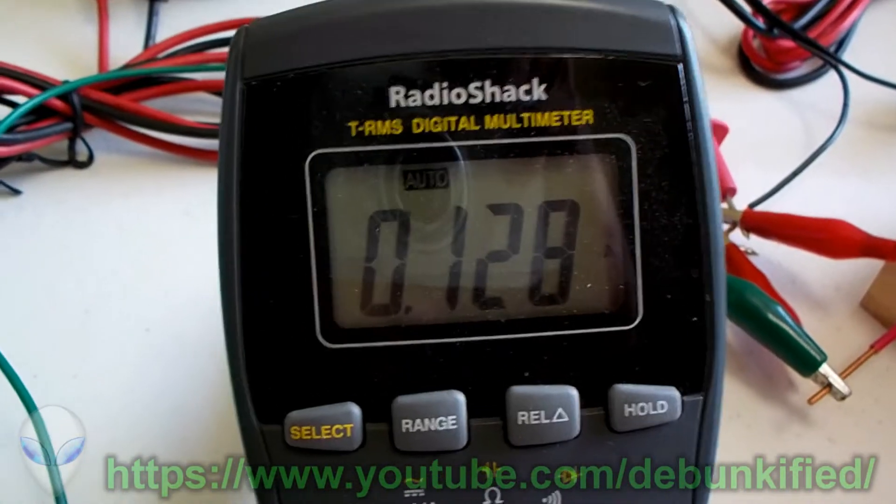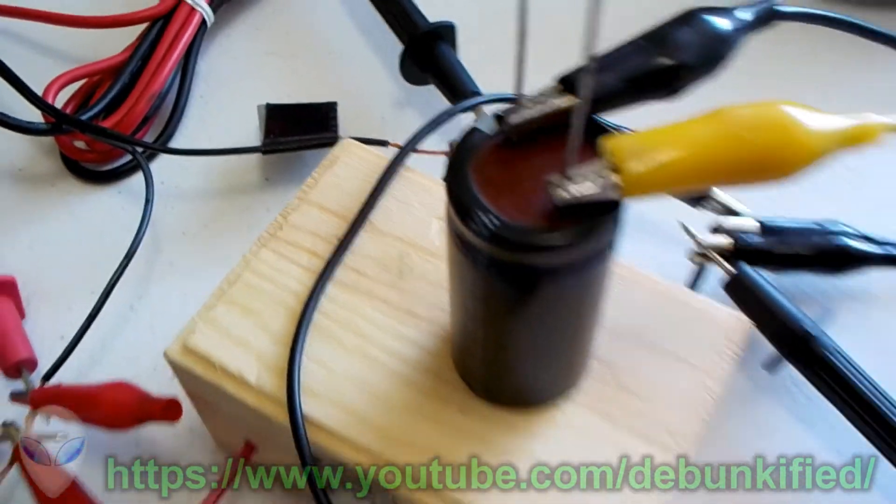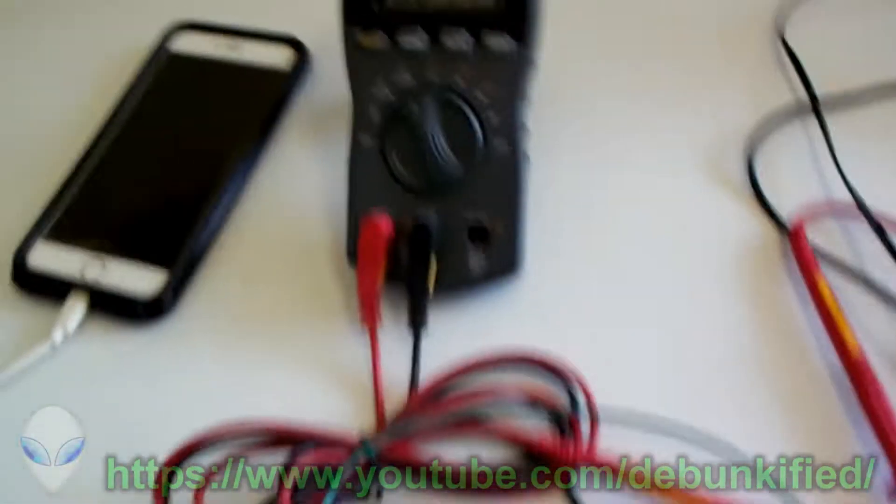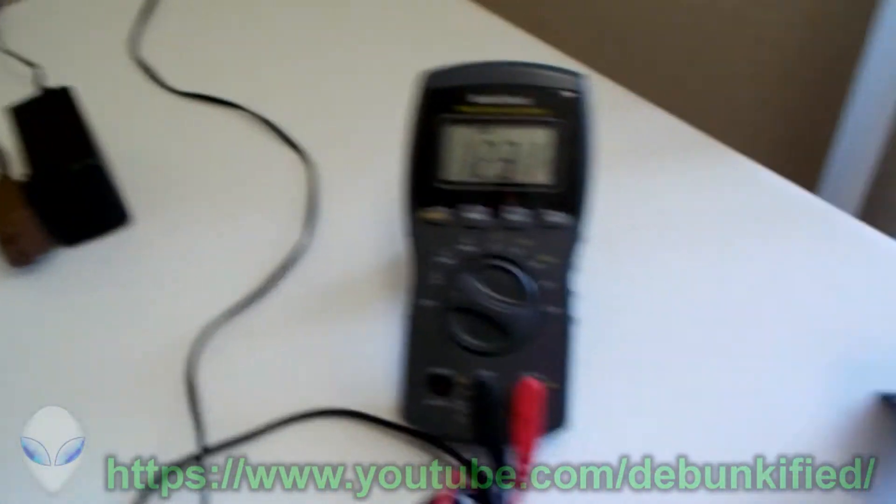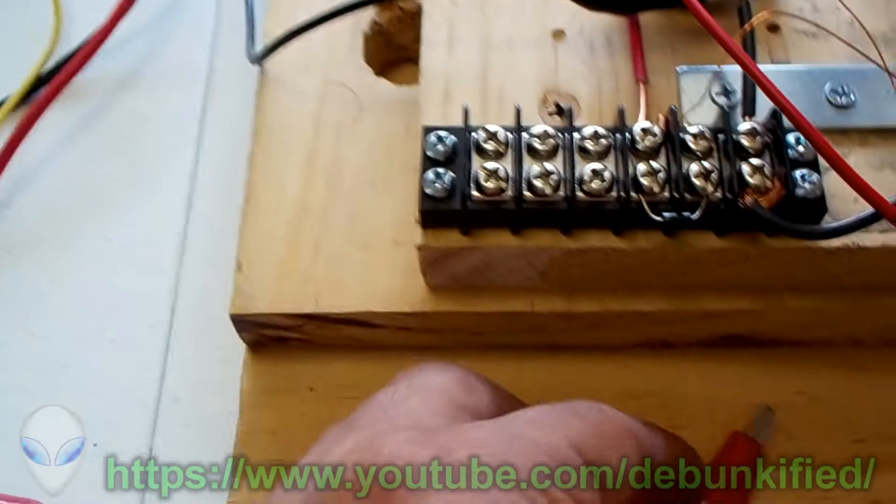And the output has gone up as well to 0.128 amps at 19.30 volts. This voltage is sitting across the capacitor. Alright, so let's reconnect that back up. So this is under unity right here, all that is under unity.